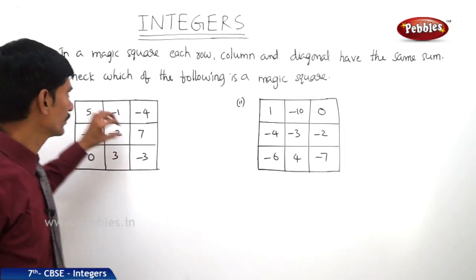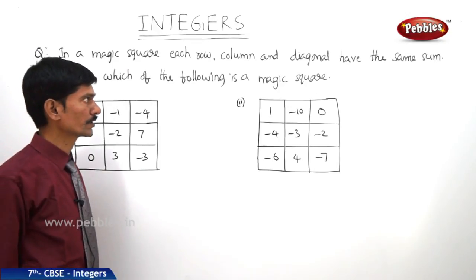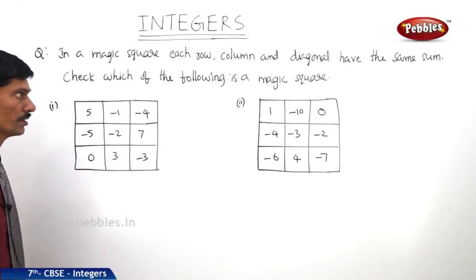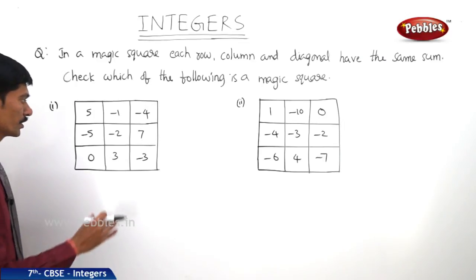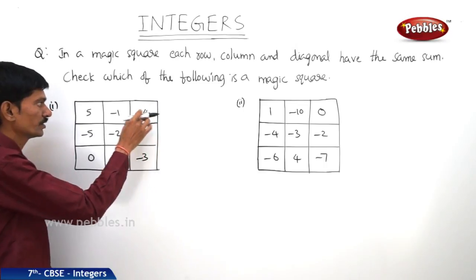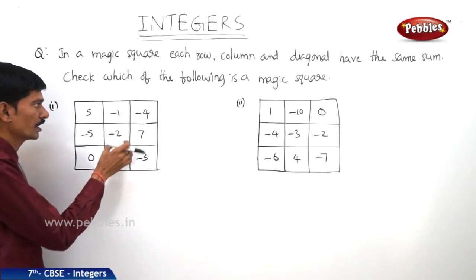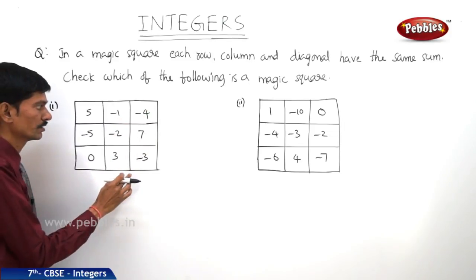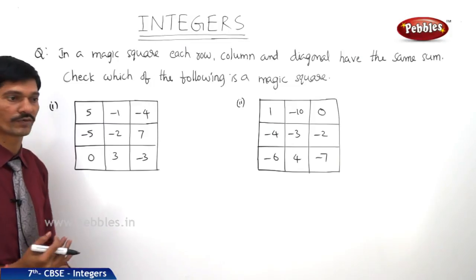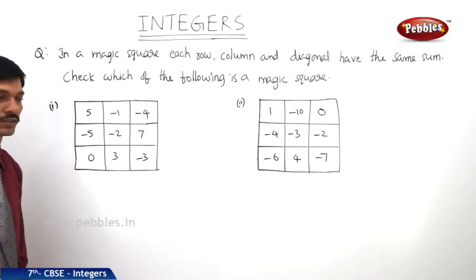Now let us solve a problem. In a magic square, each row, column and diagonal have the same sum. Now check which of the following is a magic square. If the sum of all the integers in each row, each column, and even the two diagonals gives the same sum, then it is said to be a magic square. Now let us see the first square whether it is a magic square or not.